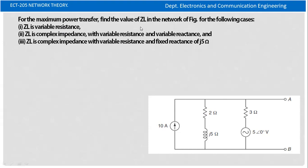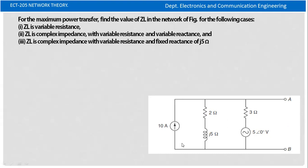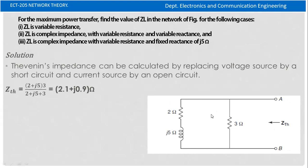In the first step, we have variable resistance. The source impedance is found by shorting the voltage source and opening the current source. The remaining impedances will be in parallel, giving us the Thevenin impedance.